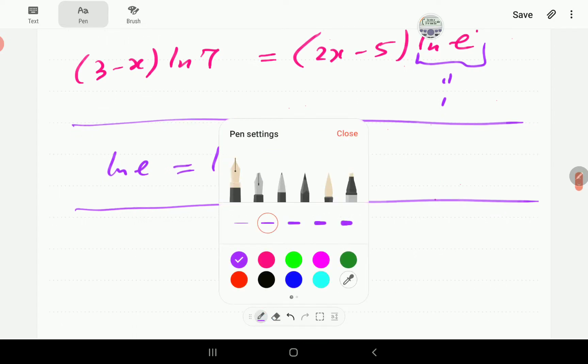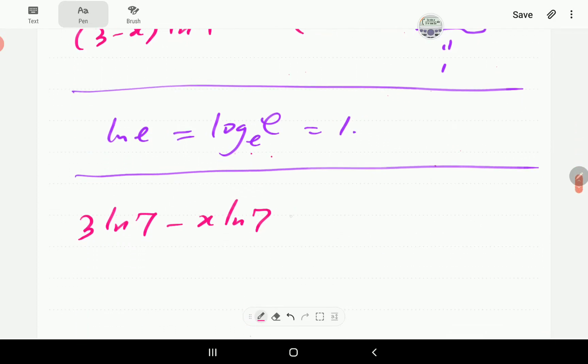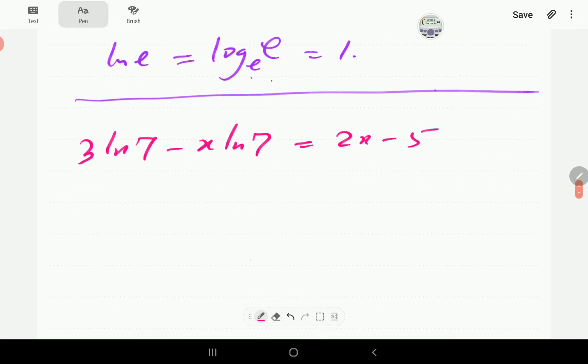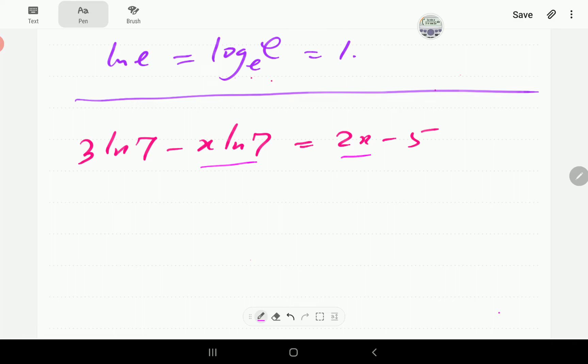On the left hand side, we are going to remove the brackets. So we're going to have 3 ln 7 minus x ln 7. Then on the right hand side, we've got 2x minus 5. And then what we need to do is to bring all the x terms to one side and all the constants to the other side. I'm going to bring all the x terms to the right hand side. So we're going to have 2x here plus x ln 7.